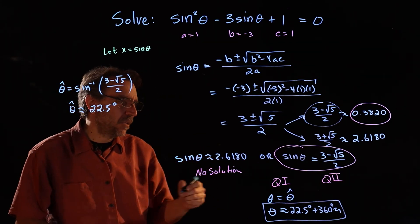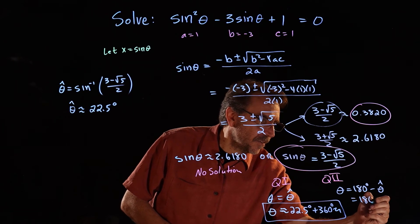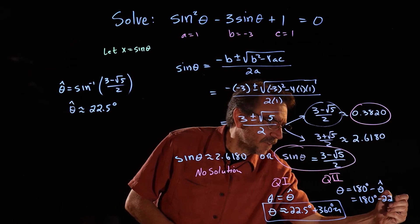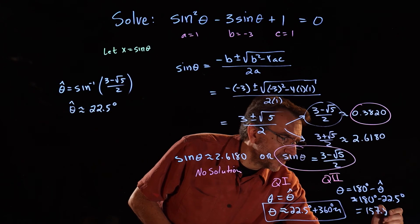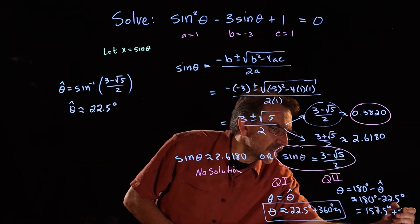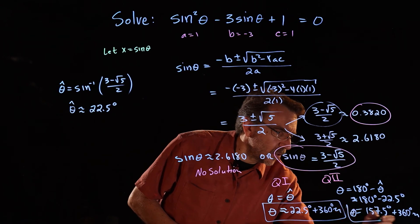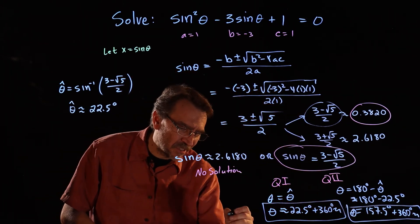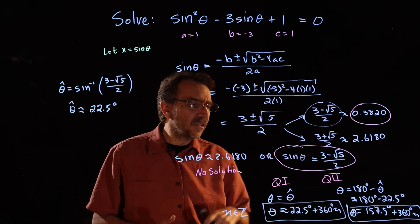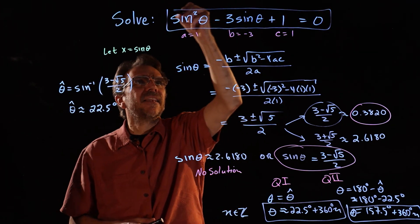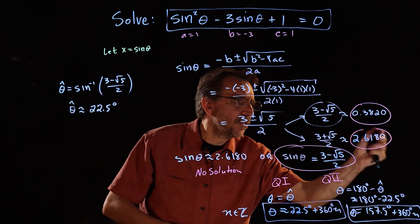Now we look in Q2. In Q2, theta equals 180 degrees minus the reference angle, so 180 degrees minus 22.5, which equals 157.5 degrees. We also add 360n to get all answers coterminal in quadrant 2, where n is in the set of integers. So those are all the solutions to this trigonometric equation — it didn't factor, so we used the quadratic formula and obtained two values for sine theta.